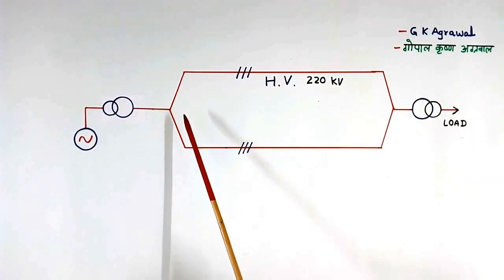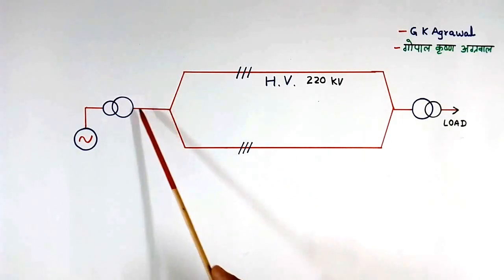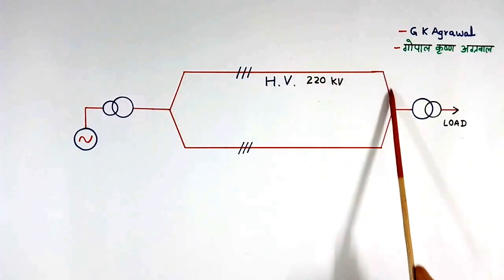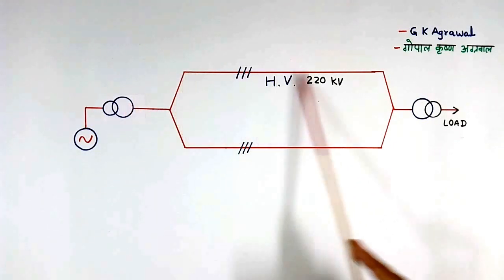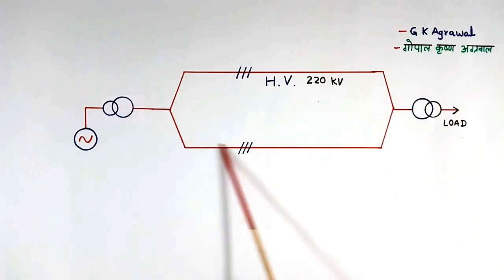So instead of one line, two transmission lines are used. They are in parallel. So power will flow from this line also, from this line also.